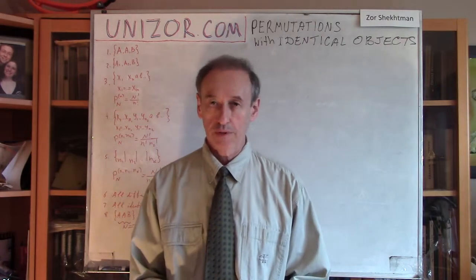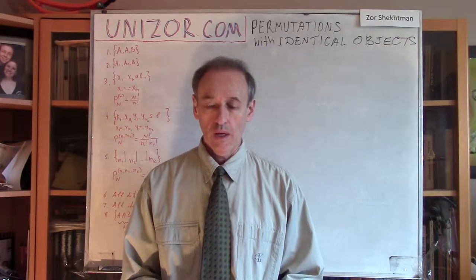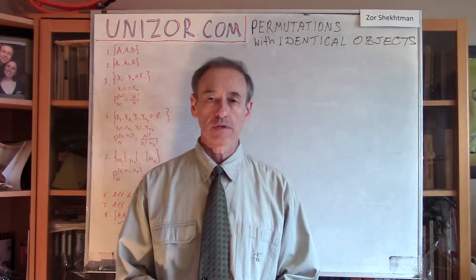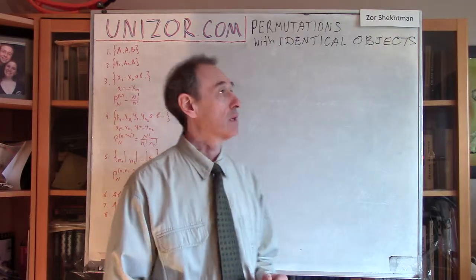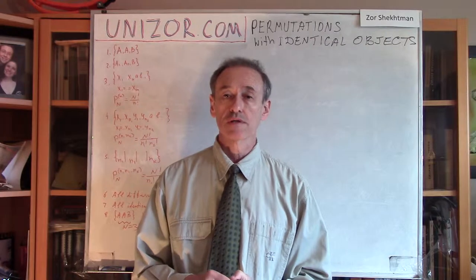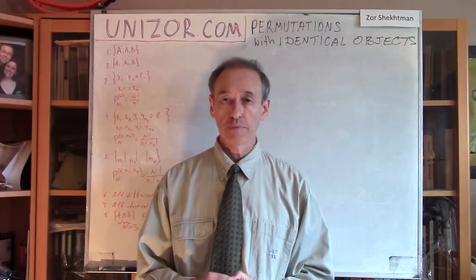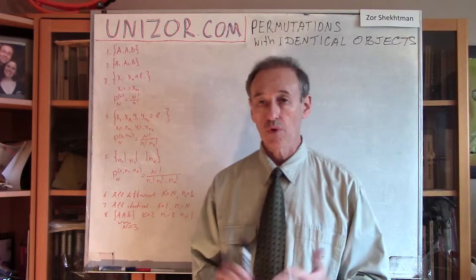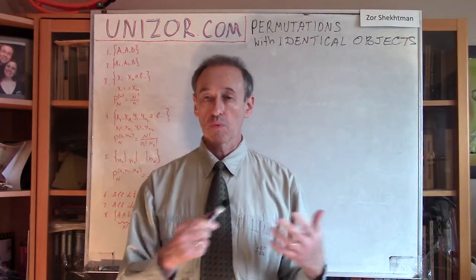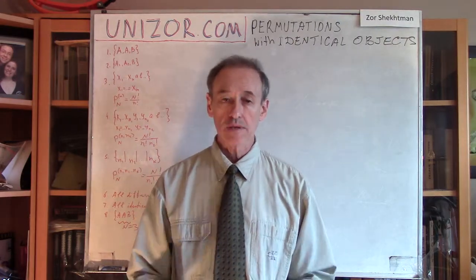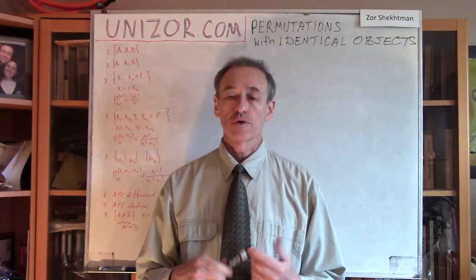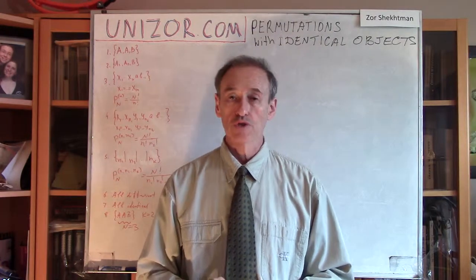Hi, I'm Zor. Welcome to Unisor Education. This lecture is a continuation of the topics called combinatorics, and it's about permutation of the set of objects, some of them might be identical. This lecture is part of the whole course, which can be found on unisor.com, together with notes for this lecture and some exercises. I do recommend you to go to unisor.com to work with this educational material.